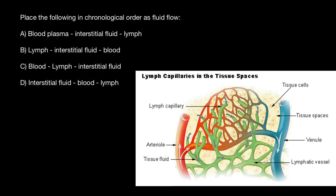The lymph system doesn't have organs that circulate lymph. When interstitial fluid enters the lymphatic system it is called lymph. Our blood circulatory system has a heart that circulates blood, but the lymphatic system is a passive system and doesn't have any organ that pushes lymph within it.